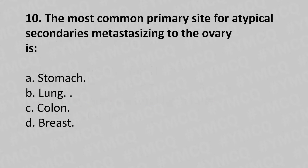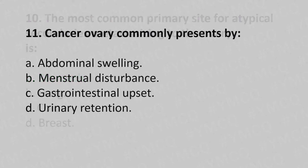Question 10: The most common primary site of atypical secondaries metastasizing to the ovary is — option A: stomach, option B: lungs, option C: colon, option D: breast. The answer is option A: stomach.